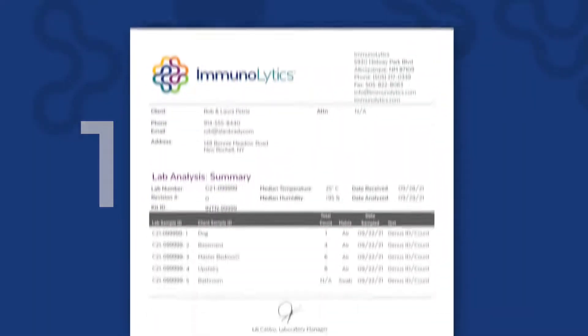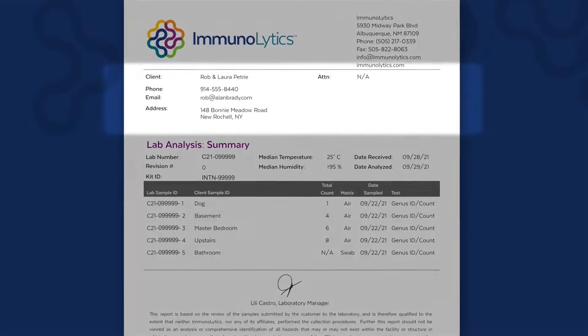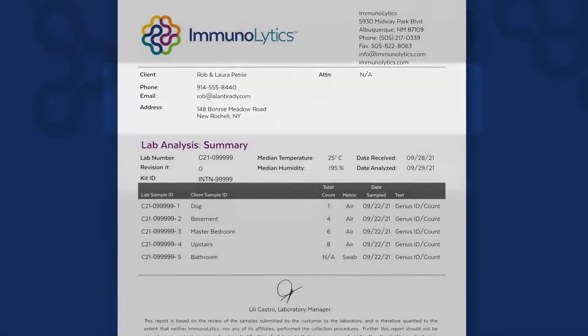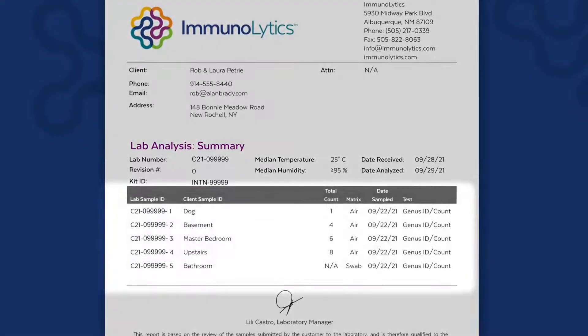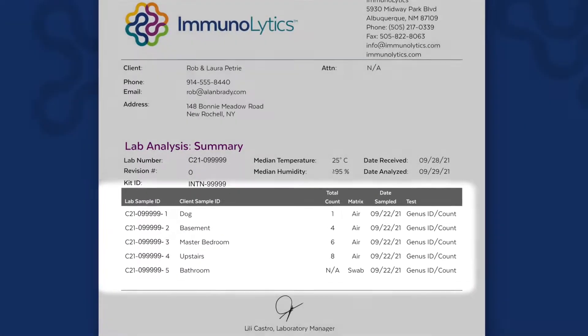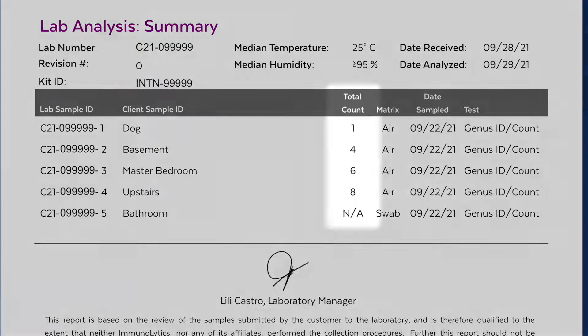On the first page of your report you'll see the information you provided to the lab on your lab processing form followed by how your samples were handled, and here a summary of your results. The important number to note here is the total count. We'll come back to this number in just a minute.